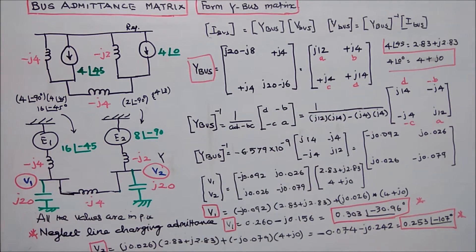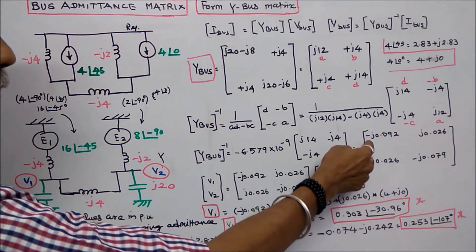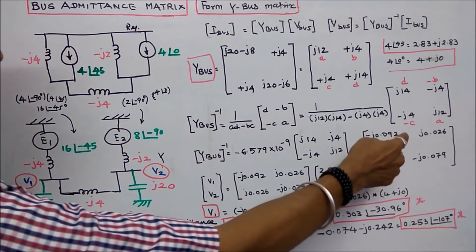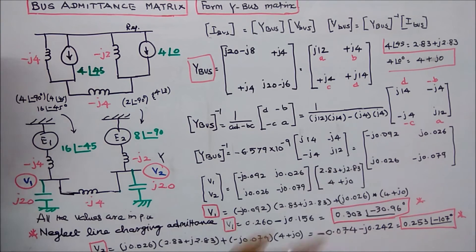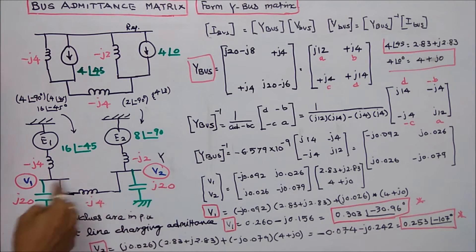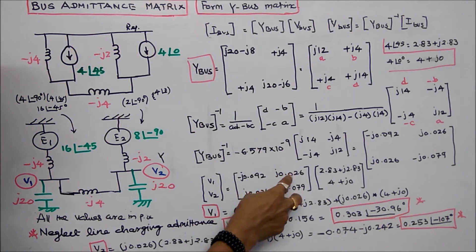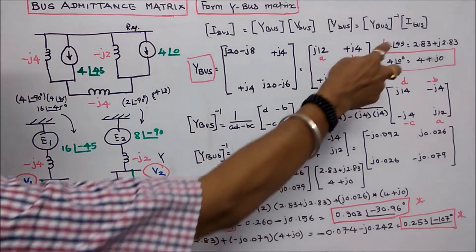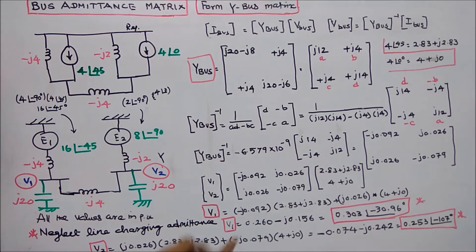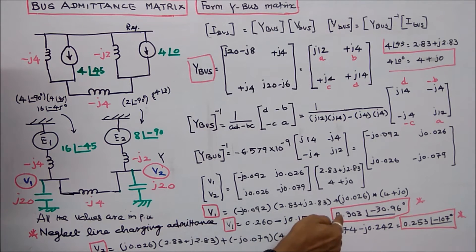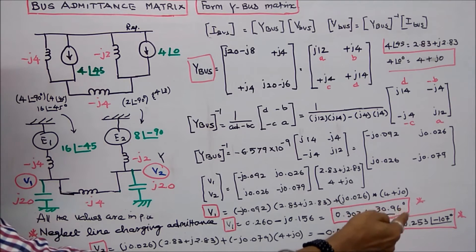Substituting all values, the Y-bus inverse is: minus J0.092, J0.026, J0.026, J0.026 minus J0.079. Multiplying by the current vector 2.83 plus J2.83 and 4 plus J0, we get: V1 equals 0.303 angle minus 30.96 degrees, and V2 equals 0.253 angle minus 107 degrees.